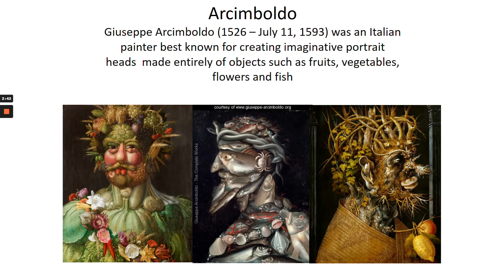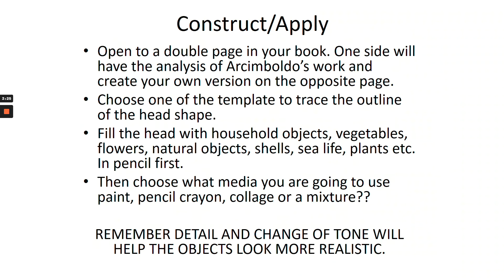Arcimboldo was an Italian painter born in 1526 and died in 1593. He was best known for creating imaginative portrait heads made entirely out of objects such as fruits, vegetables, flowers, and fish. You can see how he manages to capture these in a completely realistic way — the fish look wet and slimy, and the texture on the shrubs looks rough to touch.